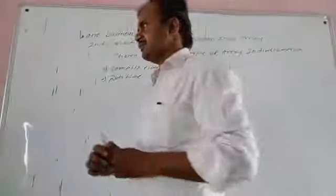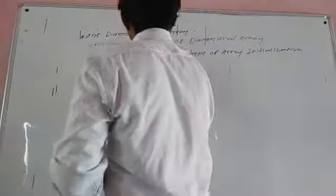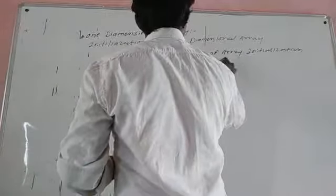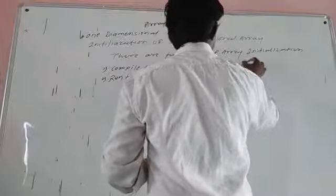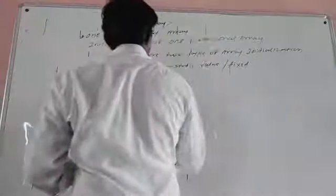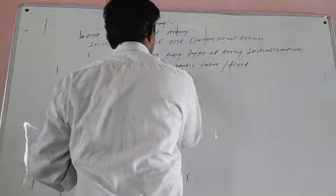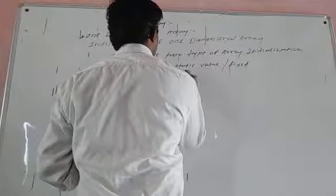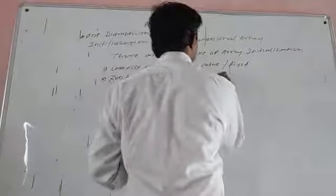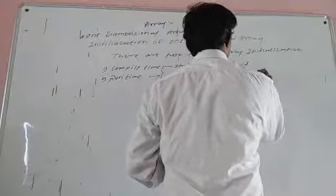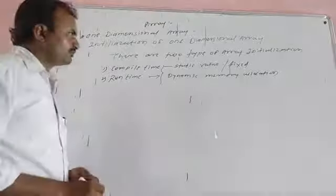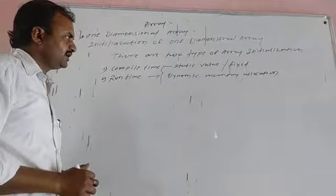What is compile time? Compile time means the value is static — it is fixed. The next one is runtime, where the value can change.